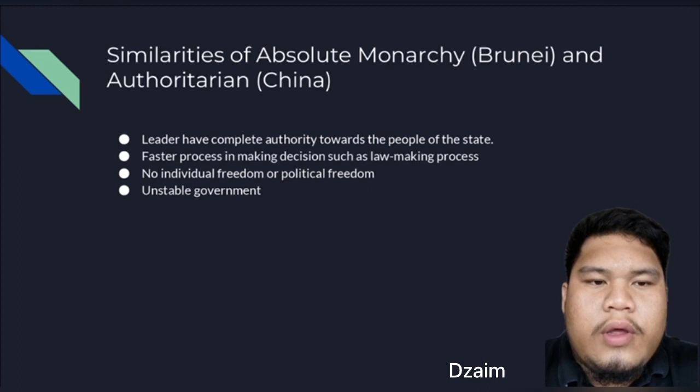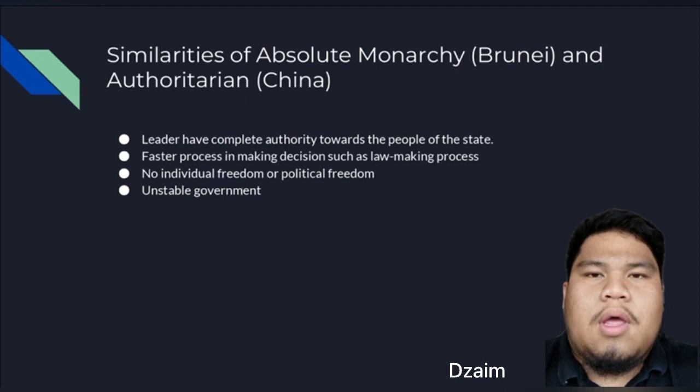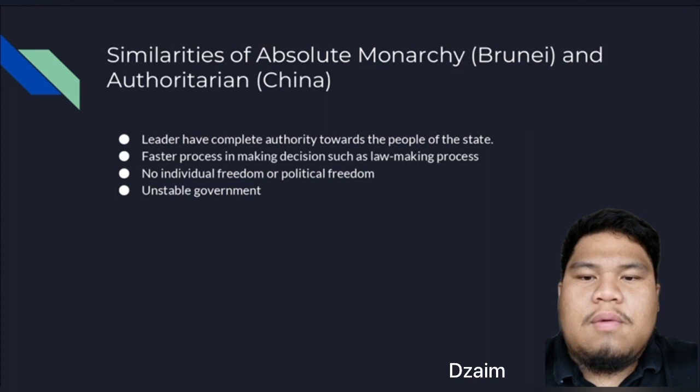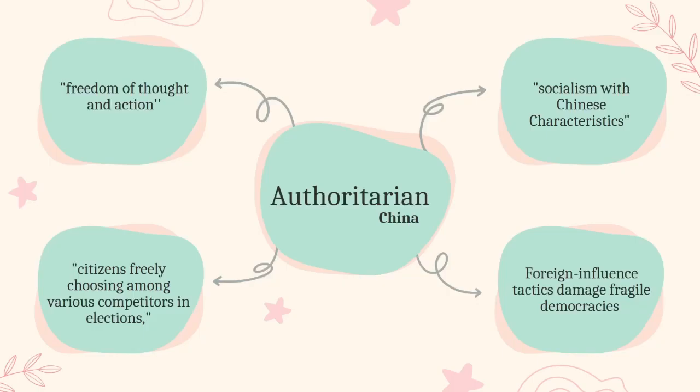Fourth, unstable government. Since both governments are controlled by one person — the head of state and government — if the leader makes a bad decision, it could cause a big problem in the whole state such as economic problems and chaos among the people. Thus, if there is a continuous unsolved problem, there is a high chance that other countries might invade and disturb the sovereignty of the state. That's all I want to present about the similarities of absolute monarchy and authoritarian.